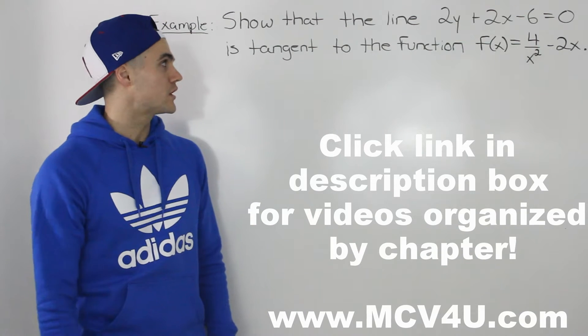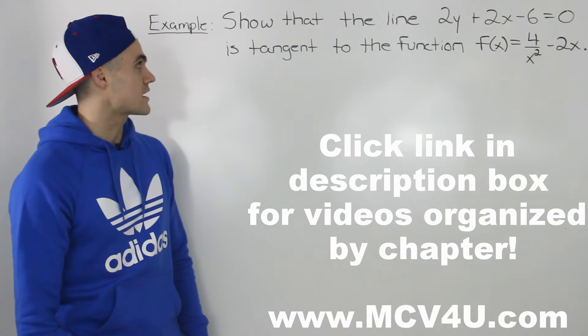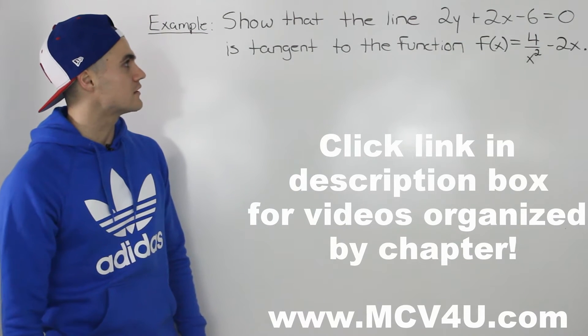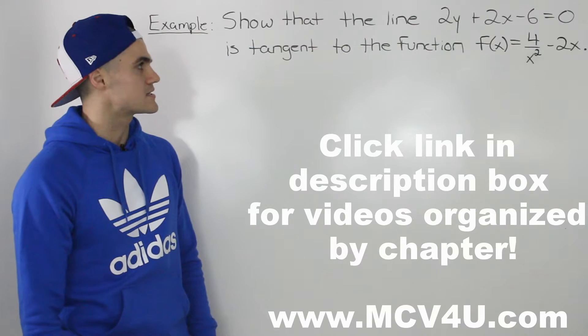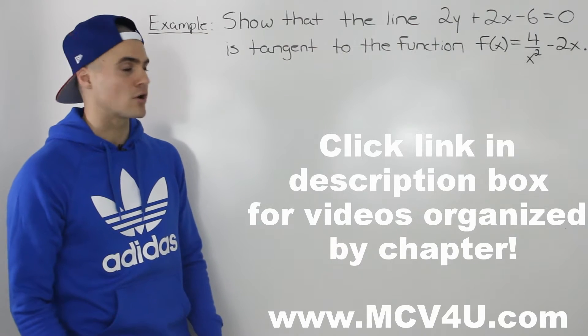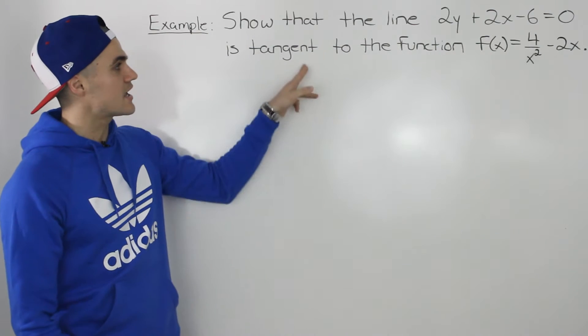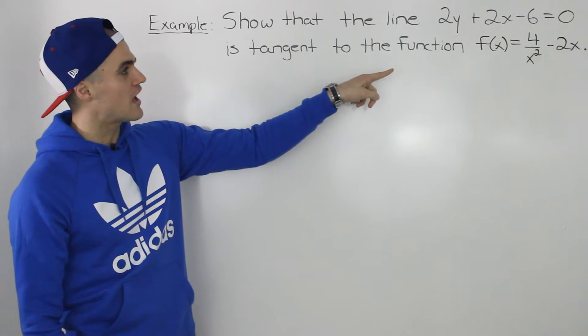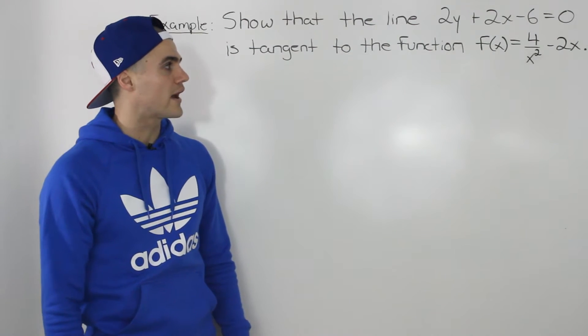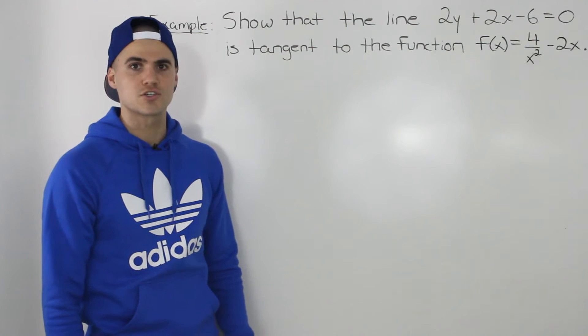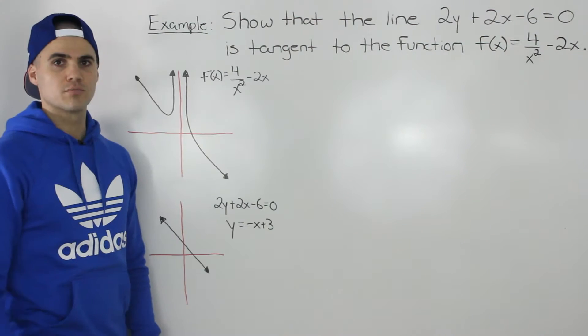Welcome back everybody. Moving on to the next example. Show that the line 2y plus 2x minus 6 equals 0 is tangent to the function f of x equals 4 over x squared minus 2x.